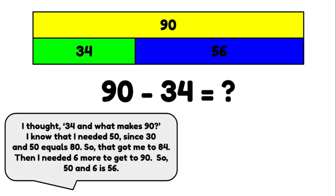I thought 34 and what makes 90? I know that I needed 50 since 30 and 50 equals 80, so that got me to 84. Then I needed 6 more to get to 90. So 50 and 6 is 56.